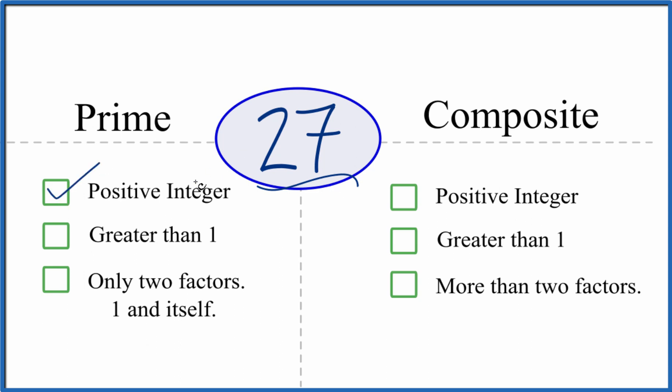It's a positive integer, it's greater than 1, and we could say 1 times 27, that equals 27, but also 3 times 9. So both 3 and 9, they go into 27 evenly. So there are more than two factors.